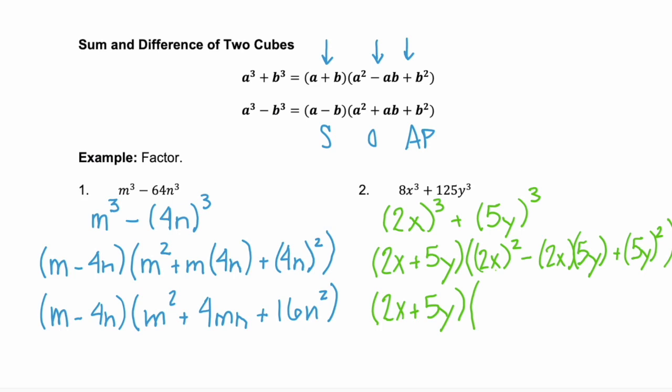Our binomial doesn't have anything to be simplified, so it stays as 2x plus 5y. Our trinomial, the first term, 2x squared, is 4x squared, because 2 squared is 4, and x squared is x squared. Our next term is minus 2 times 5, which is 10xy. And our last term, 5y squared, is 5 squared, 25, times y squared.